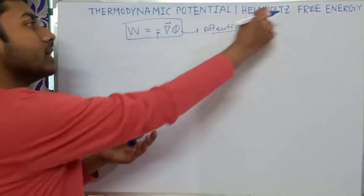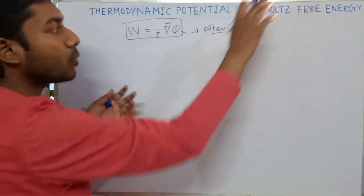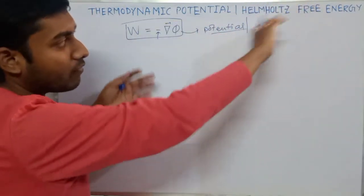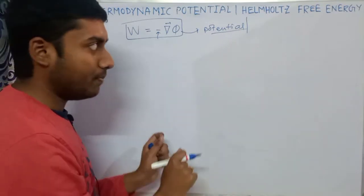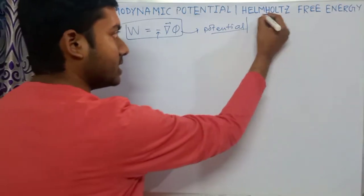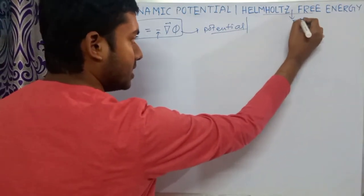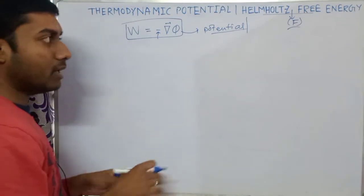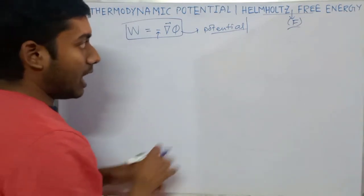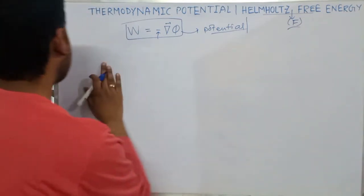Helmholtz free energy, Helmholtz potential, and free energy — all three terms are the same — and it is denoted with F. Later in this video, I will define what F is and how it is defined.